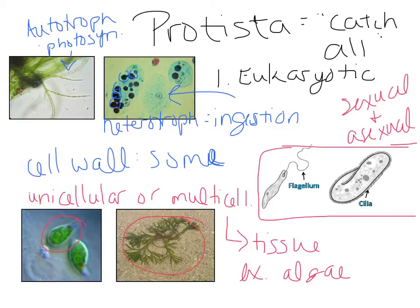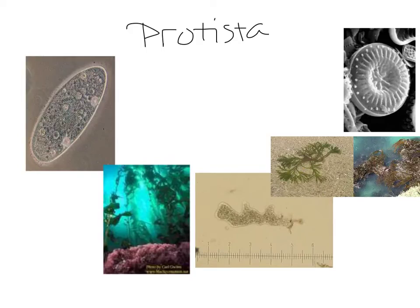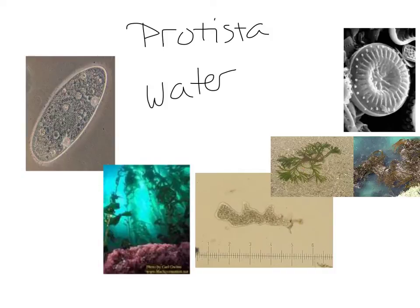When talking about motility, if they are motile — and a lot of these organisms are unicellular — they will have either a flagellum or cilia to enable movement. One distinguishing characteristic of protists is that a lot of them live in a water environment: freshwater, saltwater, or inside an organism. Some of them live on organisms, but a lot live in water.